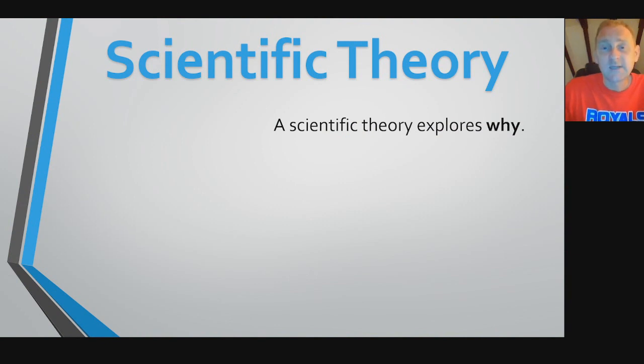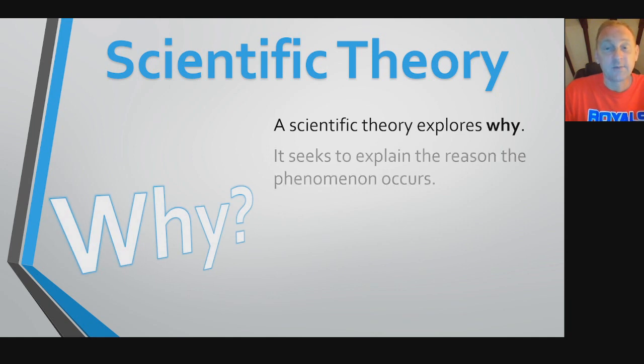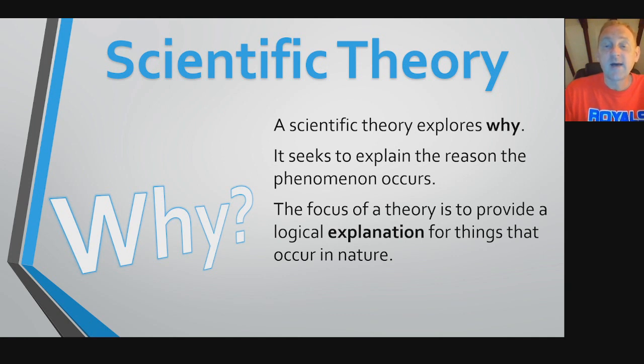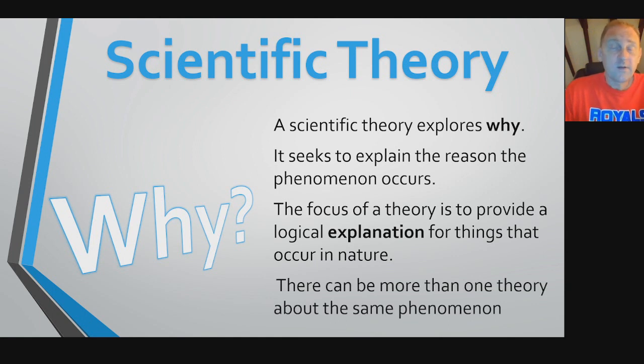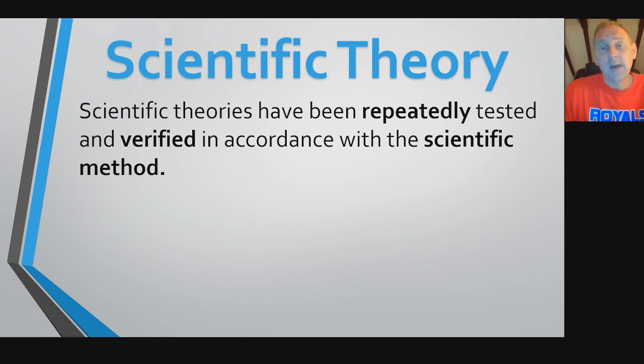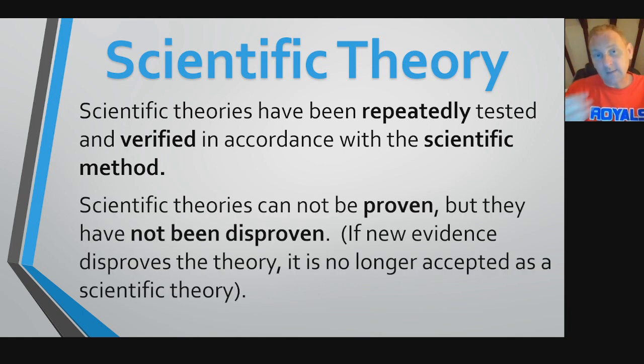Next thing we're going to talk about is scientific theories. A scientific theory explores why things happen. It seeks to explain the reason a phenomenon occurs. The focus of a theory is to provide a logical explanation for things that occur in nature. There can be more than one theory about the same phenomenon. But what's unique about these theories is that they all have been verified with repeated tests. They've done these tests and the tests verify the theory. If a test goes against the theory, disproves the theory, then the theory is no longer accepted as scientific evidence.